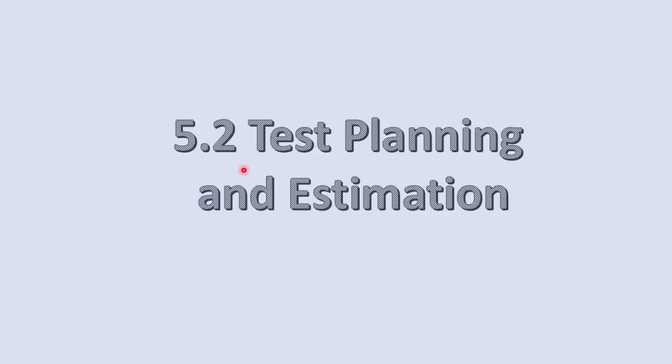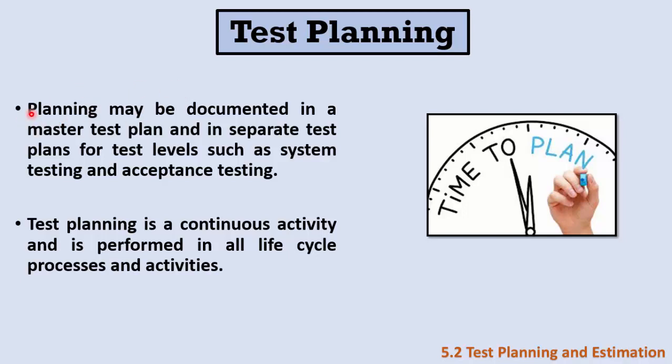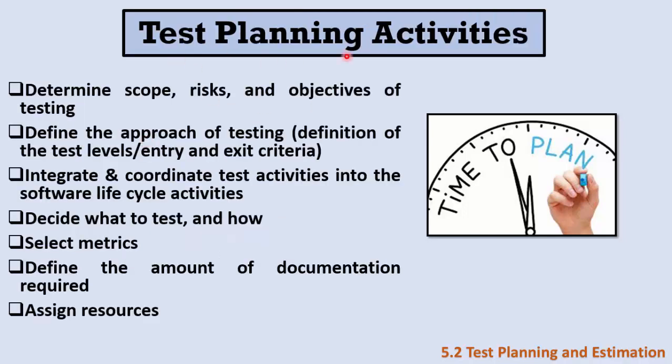The second section in chapter 5 talks about test planning and estimation. As we said in chapter 1, planning is a continuous activity — it begins at the beginning of the project and continues throughout the life cycle. Planning may be documented in a master test plan, or we may have a separate test plan for each level: a test plan for unit testing, integration, system, and acceptance testing.